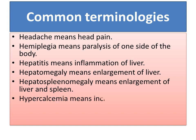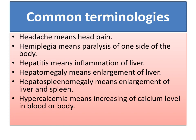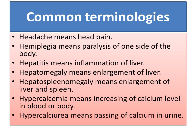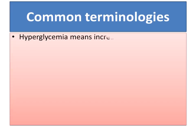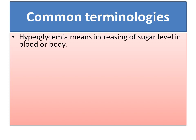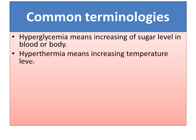Hepatosplenomegaly means enlargement of both the liver and spleen. Hypercalcemia means increasing of calcium level in the blood or body. Hypercalciuria means passing of calcium in urine. Hyperglycemia means increasing of sugar level in the blood. The fasting blood sugar (FBS) should be from 70 mg/dL to 110 mg/dL, and random blood sugar should be from 140 mg/dL to 180 or 200 mg/dL.